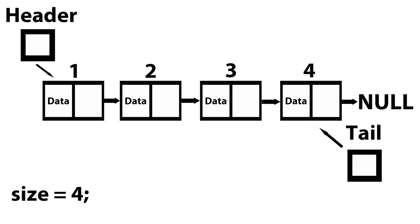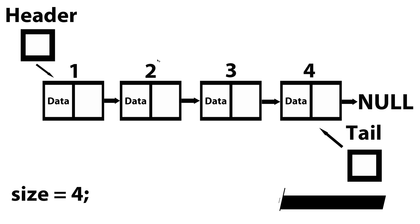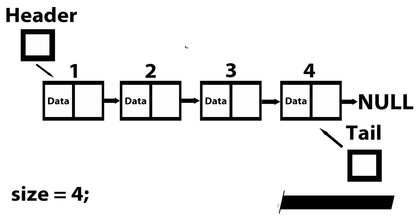So here we just have our linked list. We have our header pointing to the first node, tail pointing to the last node, and size is equal to four because there are four nodes within our linked list. These numbers represent the position — position one, two, three, or four — or you could consider them as indices. So from here, let's take a look at case one.